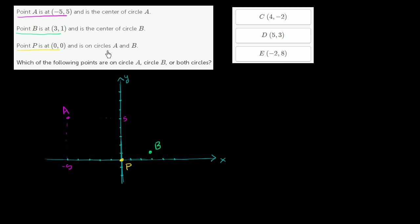Point P is on circles A and B. That's a big piece of information, because it tells us this point is B's radius away from center B. And it tells us that it is circle A's radius away from its center, which is at point A. So let's figure out what those radii actually are. We can draw the radius for circle A — since P sits on it, this segment can be considered the radius for circle A.